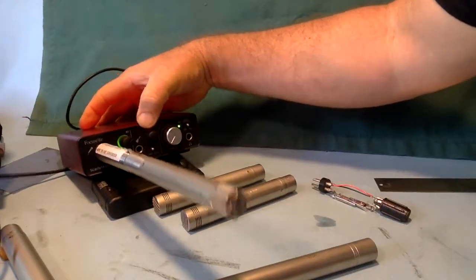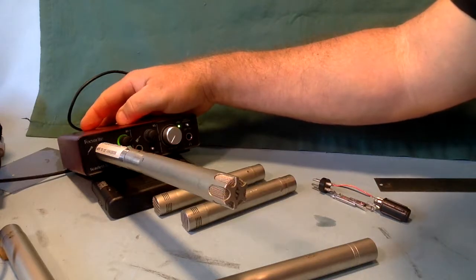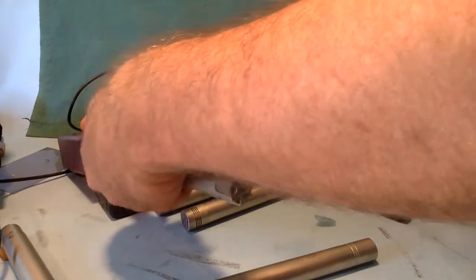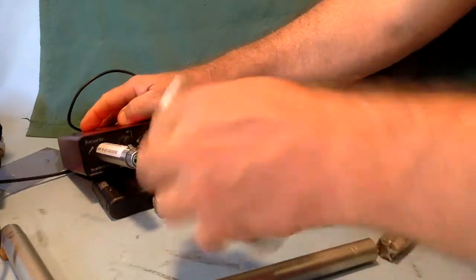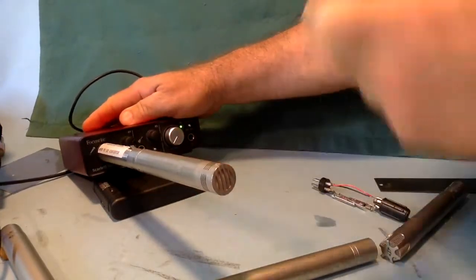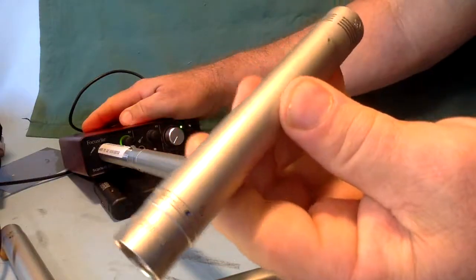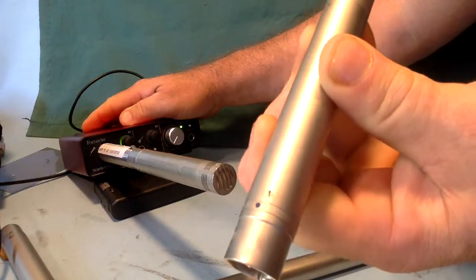Okay, so now we're recording into this Sennheiser MKH405 T-powered microphone and we'll try another one. This is a Shep CMC4. These mics were created in the 70s for use with T-power.